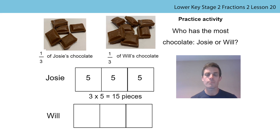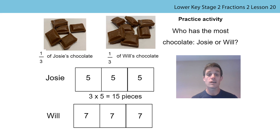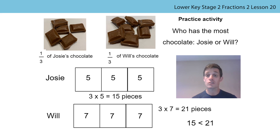Now let's look at Will. Will had two, three, four, five, six, seven pieces of chocolate as a third. So that means the other parts are also seven, and our calculation is three times seven. So Will had 21 pieces. So who had the most chocolate? The answer was Will.